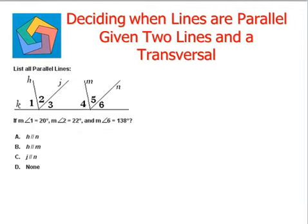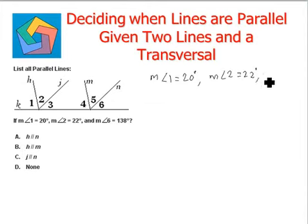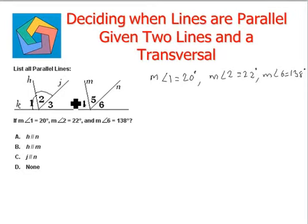Let's try the next question: list all parallel lines. We are given some lines and some angles labeled 1 through 6, with the following measures: angle 1 is 20 degrees, angle 2 is 22 degrees, and angle 6 is 138 degrees. Let's mark those angles on the diagram.